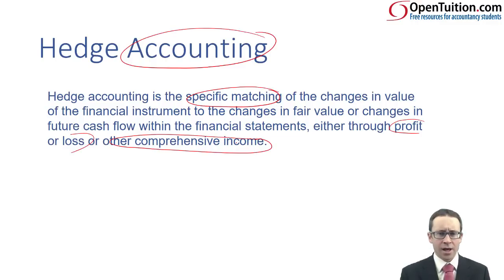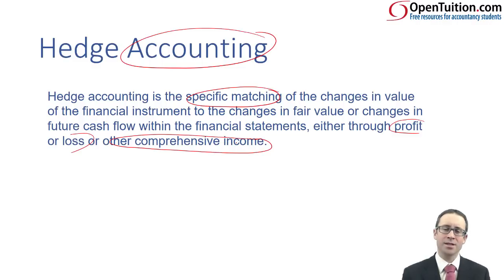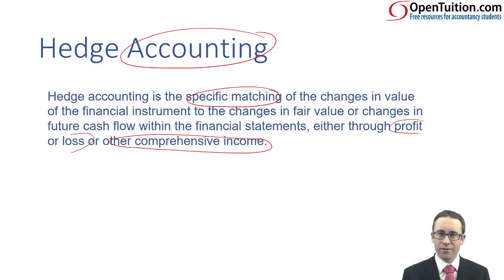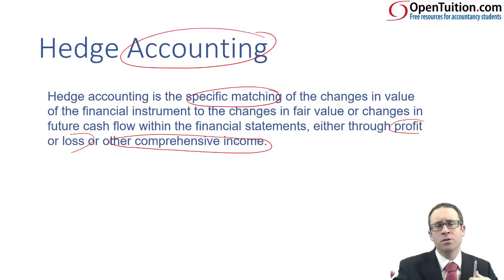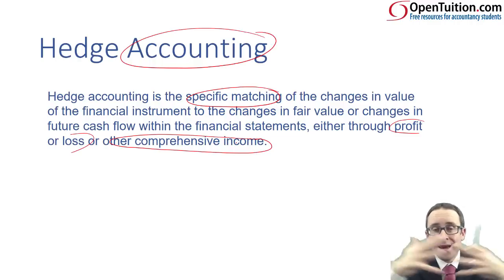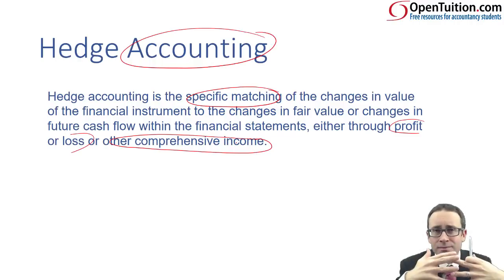This is tough stuff. So that's hedge accounting — it's a specific matching of change in value of the instrument and the item, recognized in profit or loss or other comprehensive income. We can't have something go through profit or loss with something else going through OCI. They need to be in the same place.